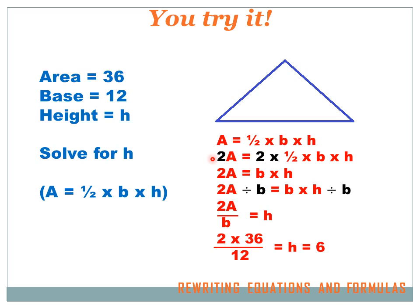Now I can rewrite the equation: 2a equals base times height. Now I want to isolate h, so I've got to get rid of the b. To get rid of a times b, I divide by b, and I divide both sides by b. Now I can rewrite it: 2a divided by b equals h. Now let's solve: a is 36 and b is 12. So I replace a with 36 and b with 12, giving me 2 times 36 divided by 12. That solves to h equals 6.